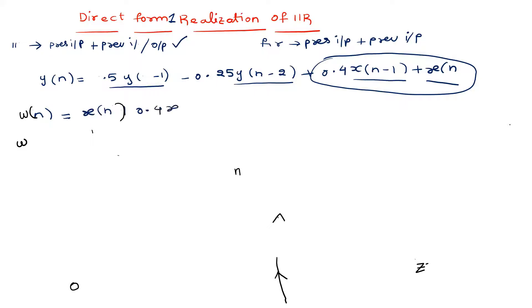0.4x(n-1). Let this be equation number one. When we substitute in the y(n) equation, we get y(n) = 0.5y(n-1) - 0.25y(n-2) + ω(n).